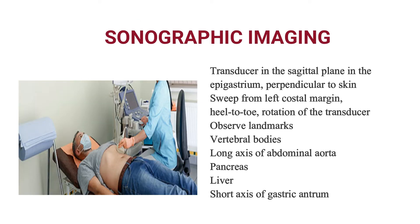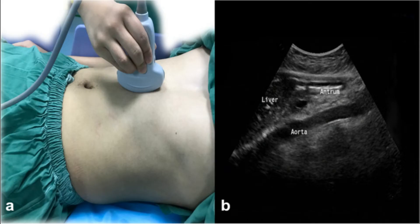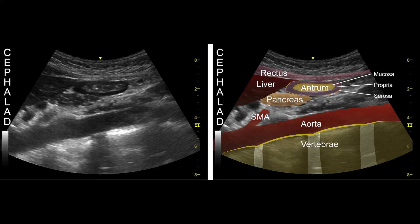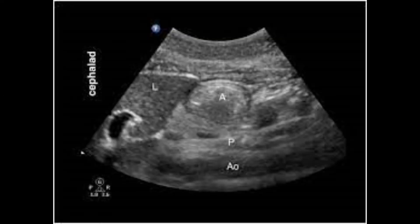Initially the transducer is placed in a sagittal plane below the xiphisternum. The landmarks from deep to superficial are: vertebral bodies, long axis of the abdominal aorta, head or neck of the pancreas, inferior margin of the left lobe of the liver, and the gastric antrum in short axis.